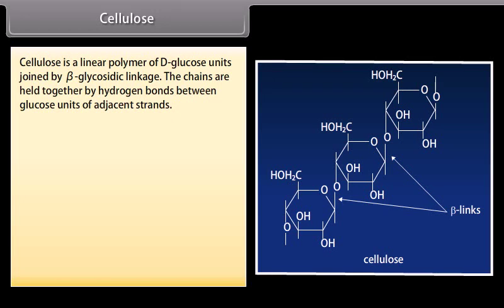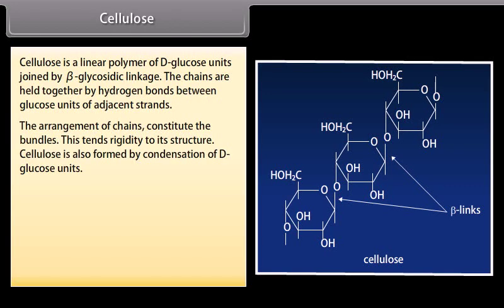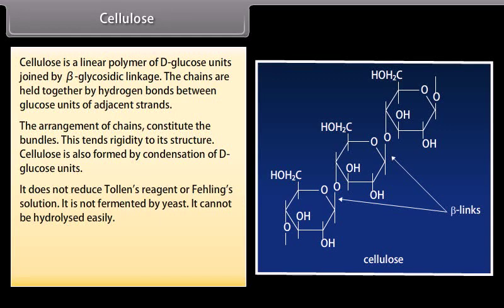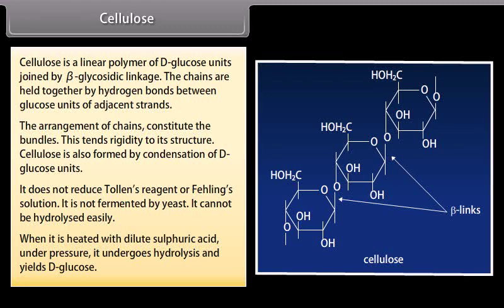Cellulose is a linear polymer of D-glucose units joined by beta-glycosidic linkage. The chains are held together by hydrogen bonds between glucose units of adjacent strands, forming bundles that give rigidity to its structure. Cellulose does not reduce Tollens' reagent or Fehling's solution, is not fermented by yeast, and cannot be hydrolyzed easily. When heated with dilute sulfuric acid under pressure, it undergoes hydrolysis and yields D-glucose.